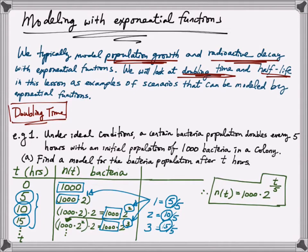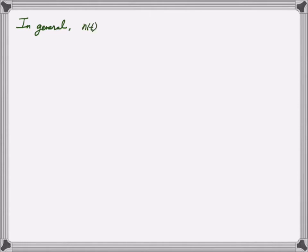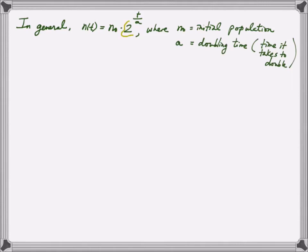This is the correct model for this colony population. In general, the population of a colony can be written as N₀ times 2 to the power of T divided by A, where N₀ is the initial population and A is the doubling time — the time it takes to double. Note that the base 2 would change to 3, for example, if the population triples after a certain amount of time.